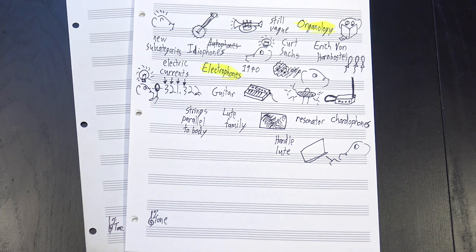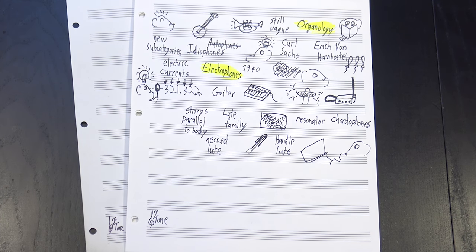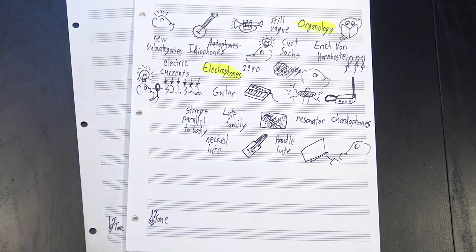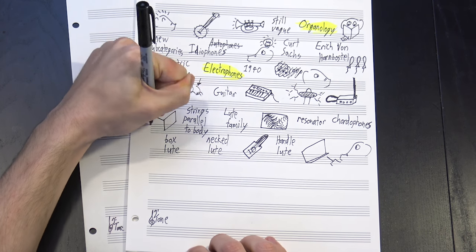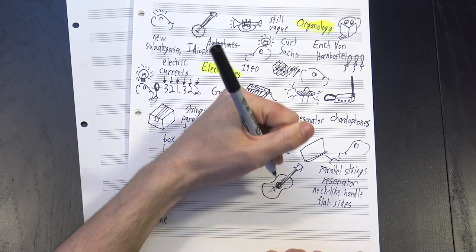The rest of it tells us what kind of lute it is. The 3 says it's a handle lute, which means all the strings are attached to a single handle. This 2 says it's a necked lute, which means the handle is attached to the outside of the resonator, like a neck, and this 2 tells us it's a box lute, which means the top and bottom are both flat, like a box. Put all that together and you've got a pretty specific description of a guitar.